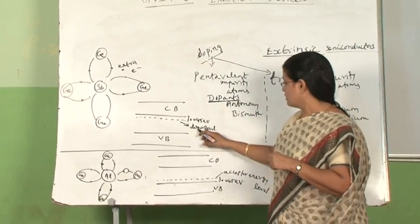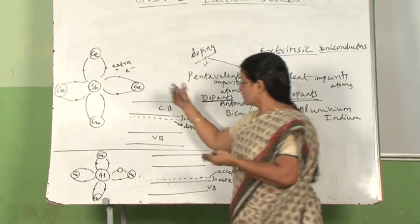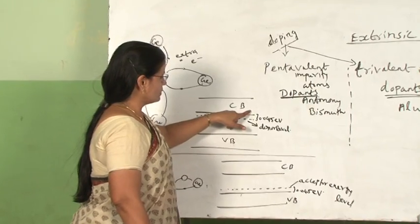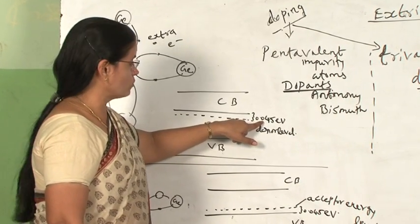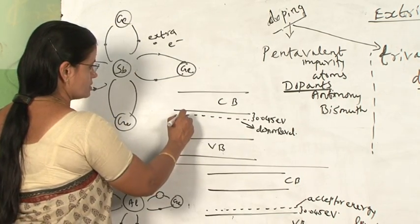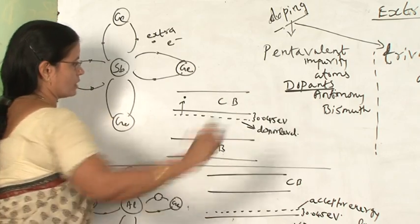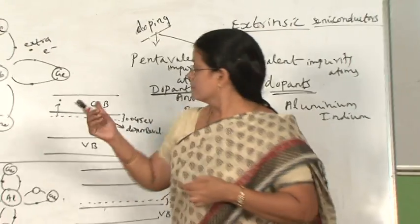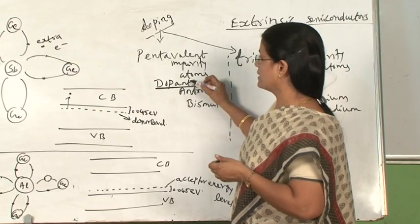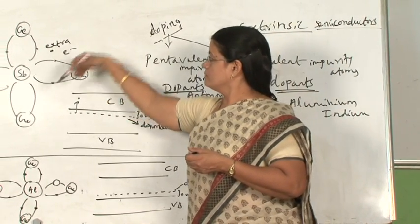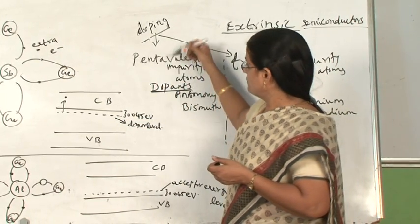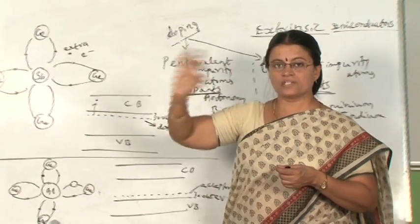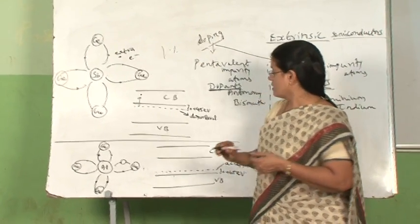This energy level is called the donor energy level because it donates electrons to the conduction band. The energy gap between the donor energy level and the conduction band is only 0.045 eV, which is very small, so electrons can easily shift into the conduction band and contribute to current. Every dopant atom added contributes one free electron to the crystal lattice, though the dopant concentration should not distort the crystal lattice and should be kept to only about 1%.